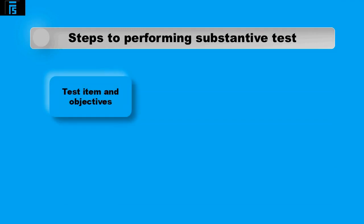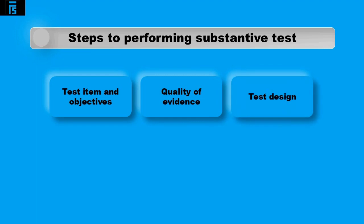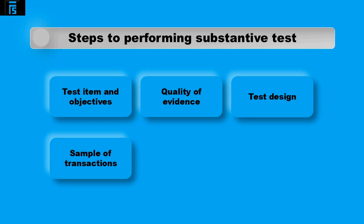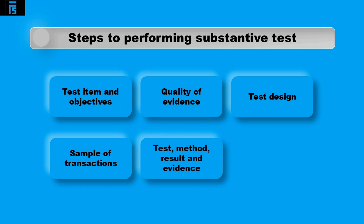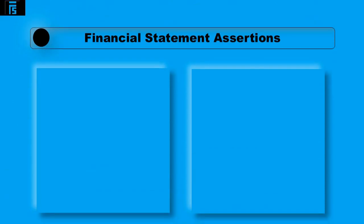The steps to performing a substantive test are: identify the item to test and set the objectives; consider the quality of evidence required — it must be sufficient and appropriate; design the test and ensure it meets the objective; select the sample of transactions; record the test method, results and other evidence as working papers in the audit file; consider the conclusion of the test — is further work required? Are there material misstatements to be amended? The objective of a substantive test must be at least one of the financial statement assertions.